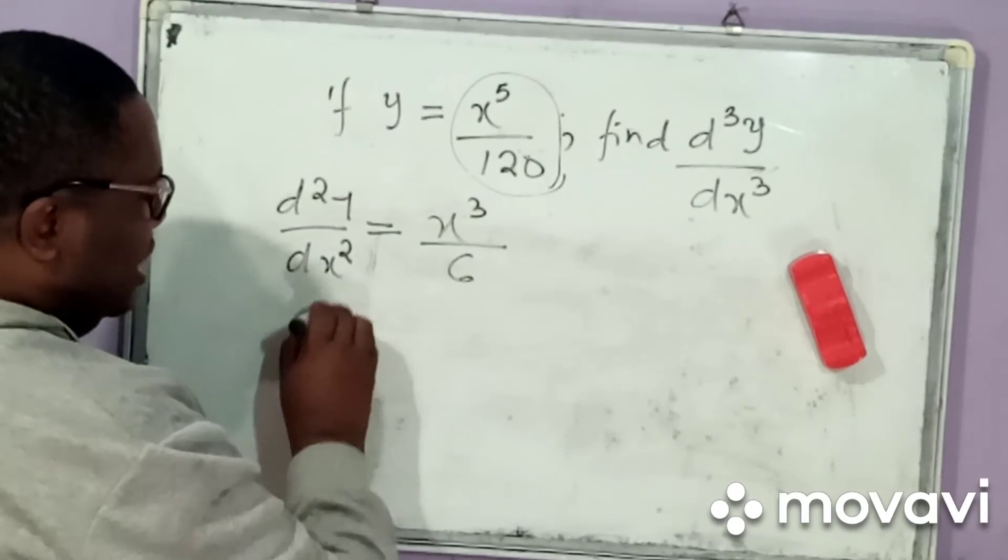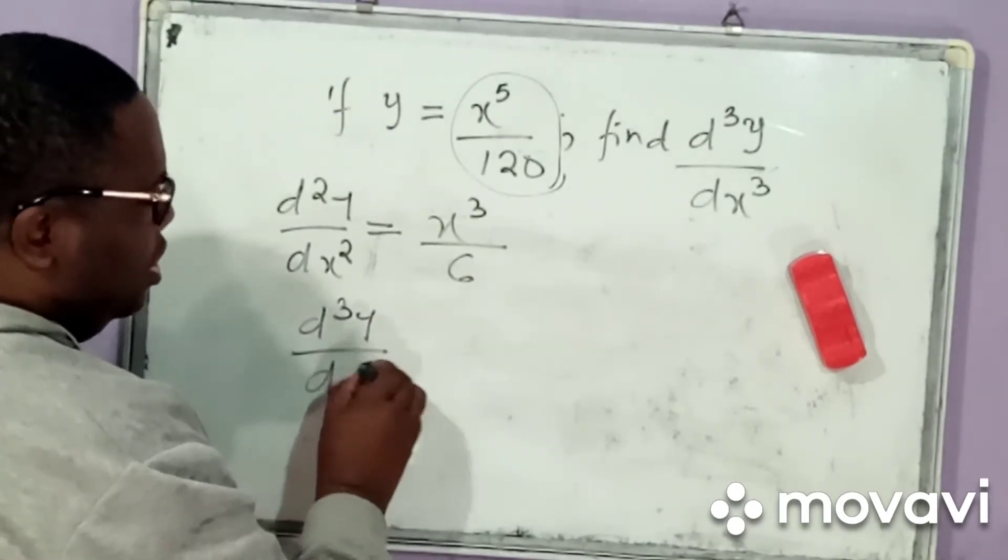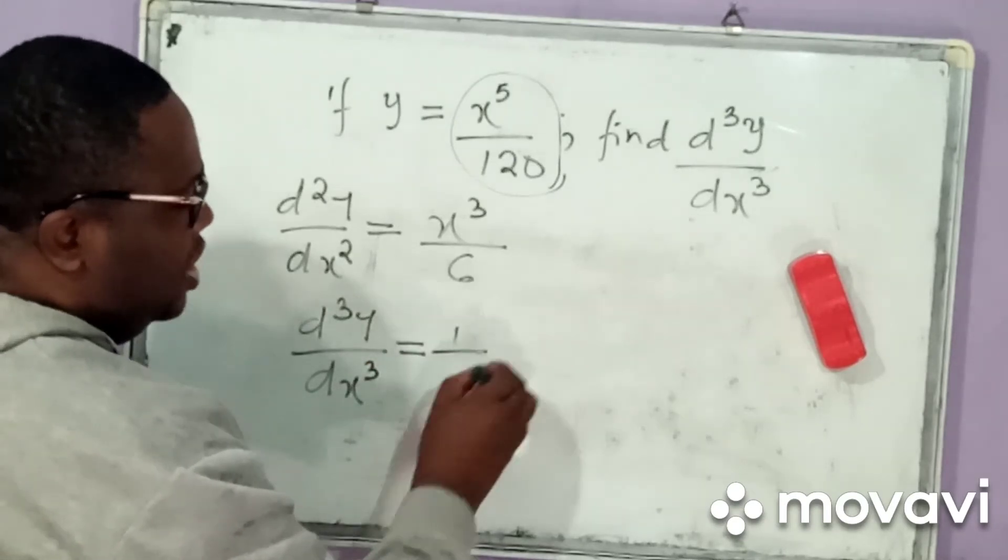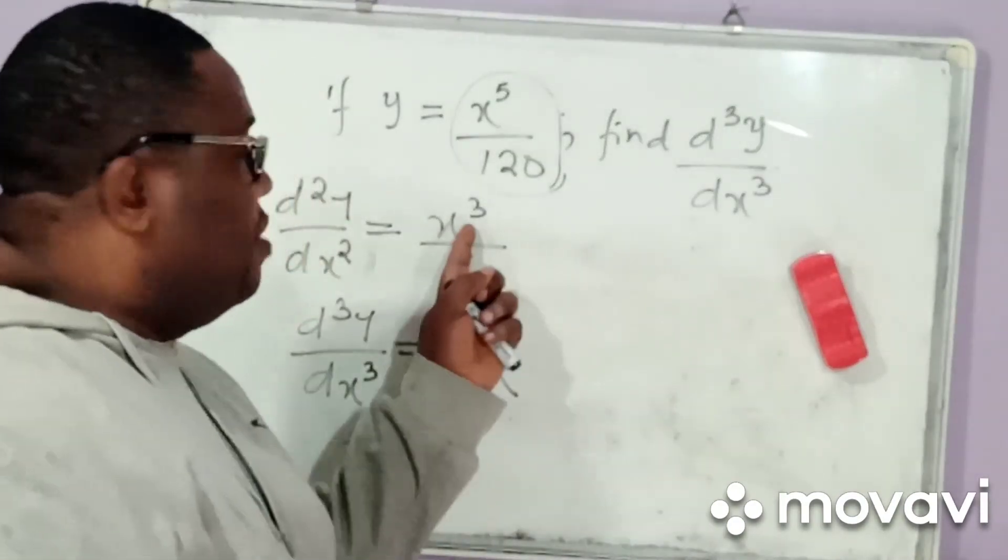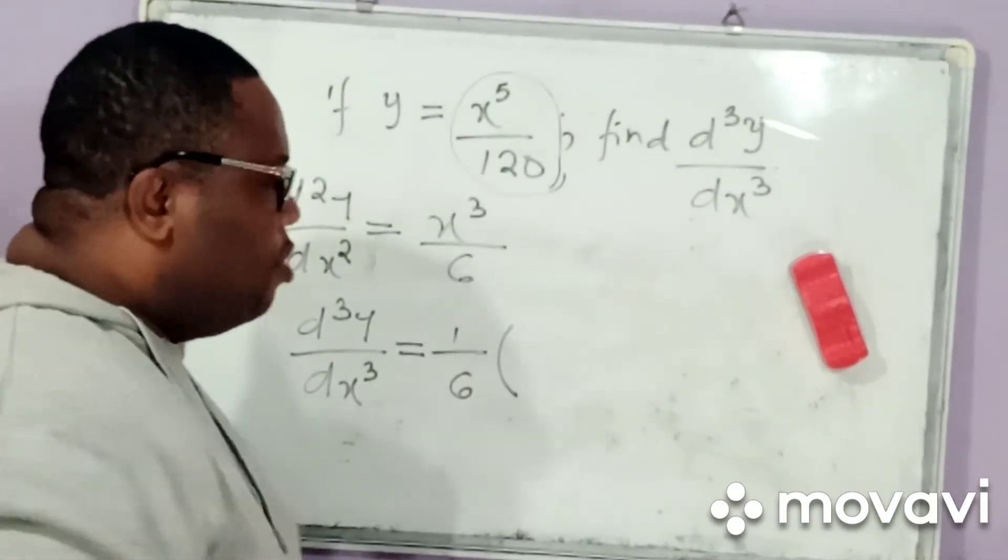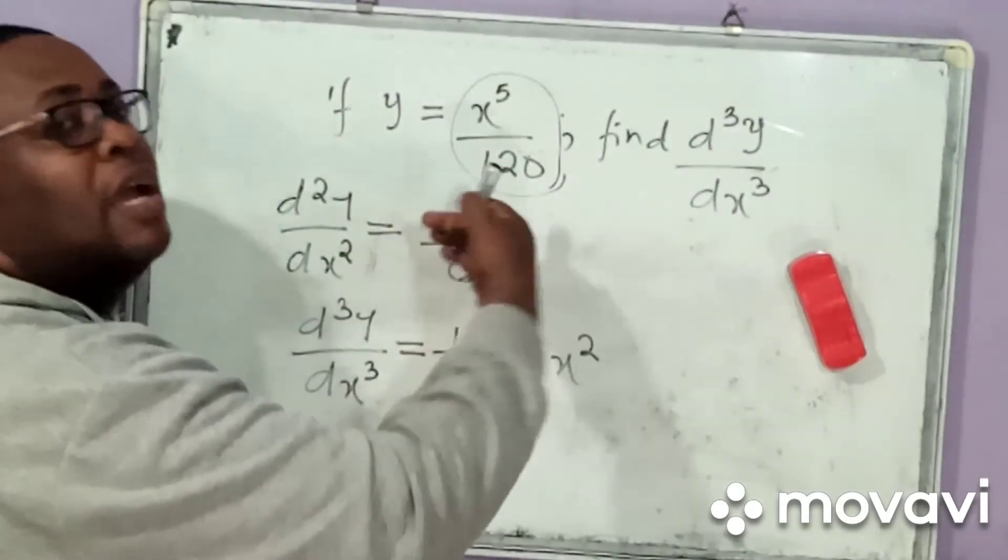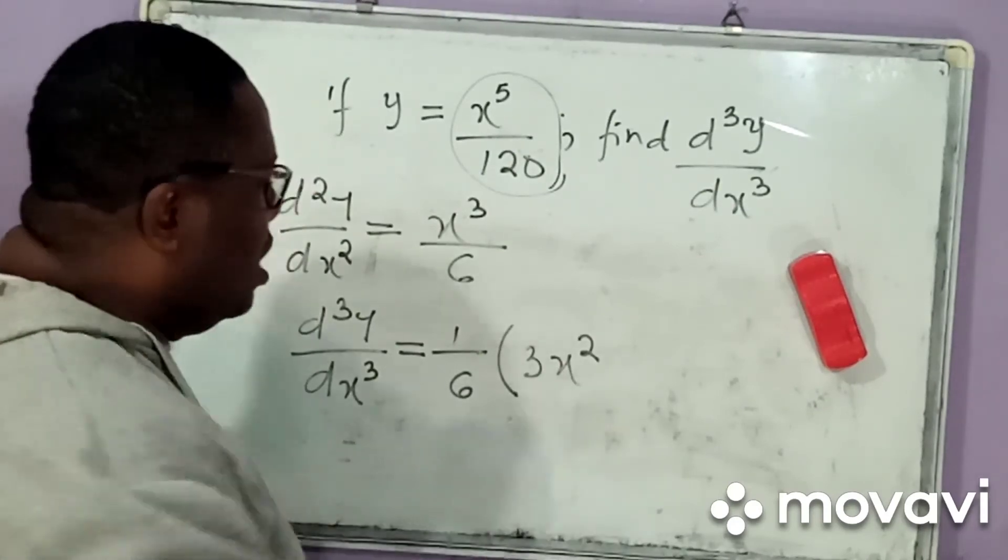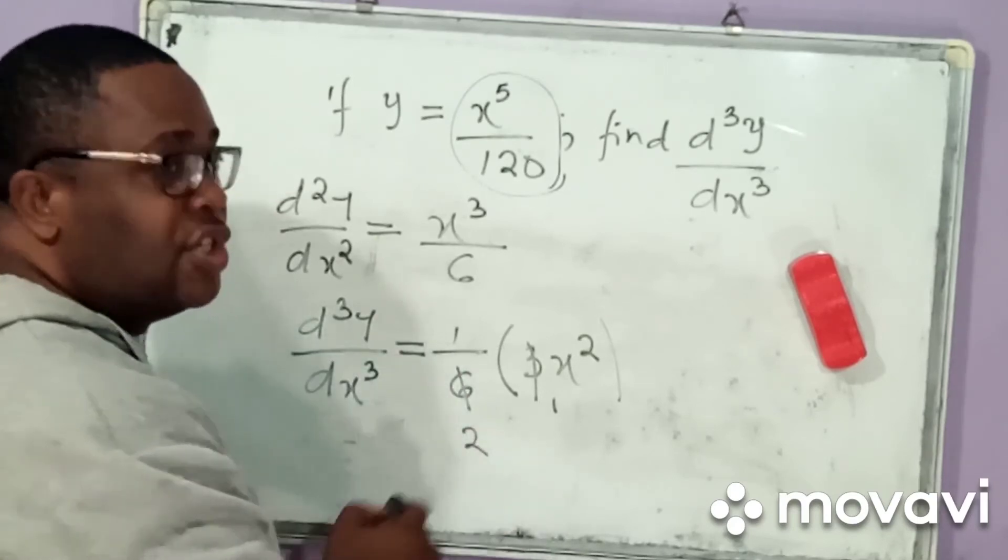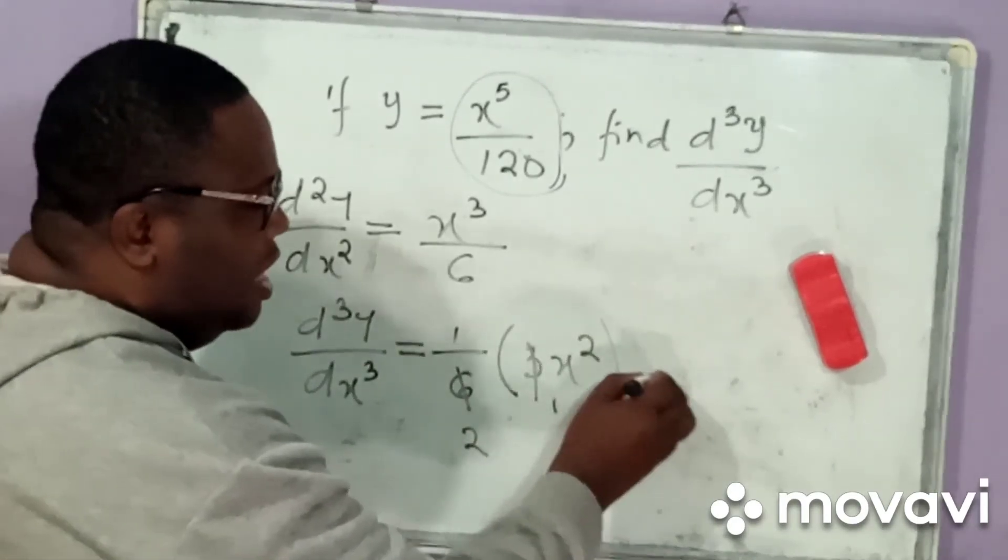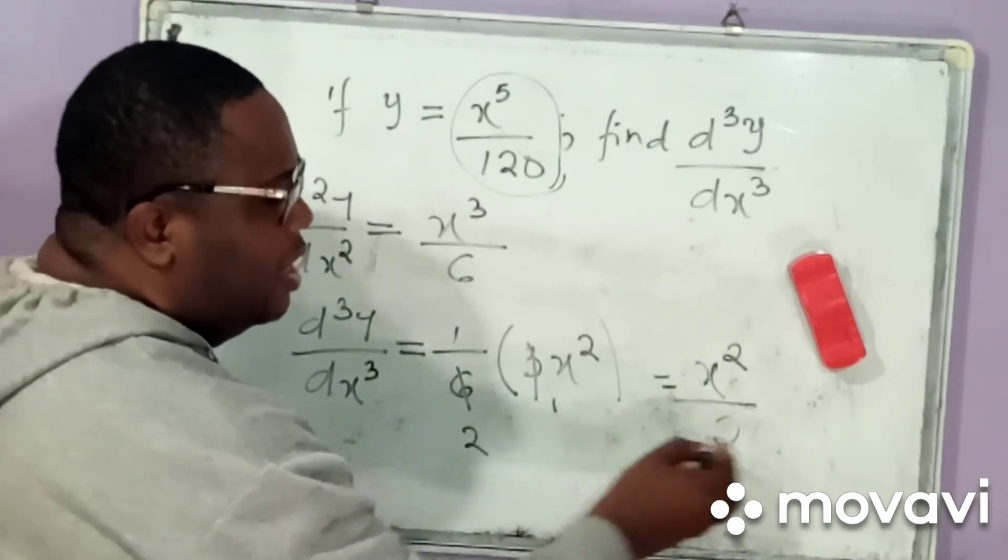Then, we simply have that d cubed y by dx cubed can simply be equal to 1 over 6 into, now, when you differentiate x cubed, you are simply going to get 3x squared, like bringing down the 3 and then subtracting 1. Okay, now, we close this. 3 goes into the 1, and then 3 goes into the 6, which is 2. So, at the end of the day, I simply have x squared divided by 2.